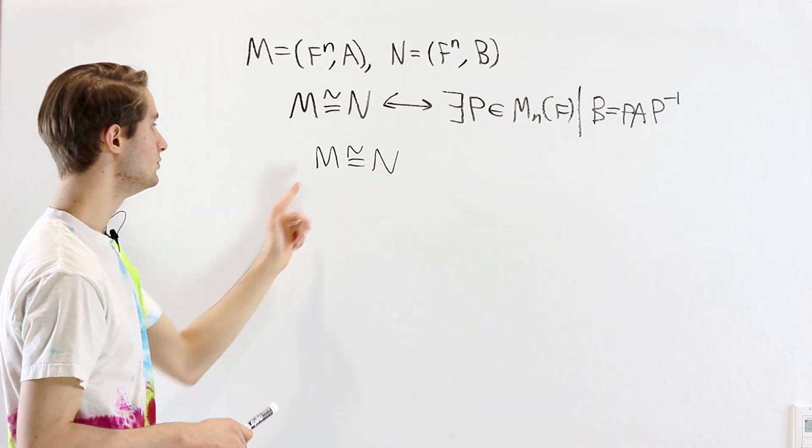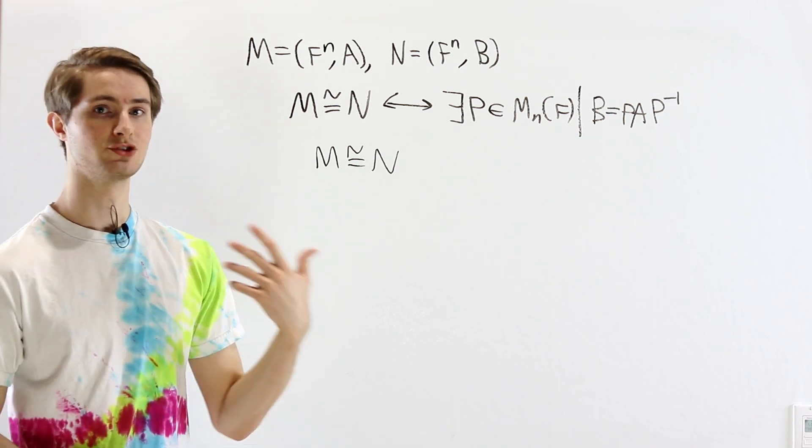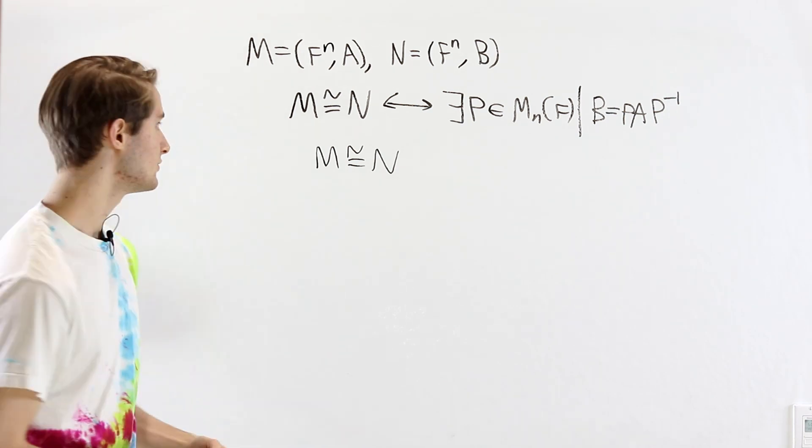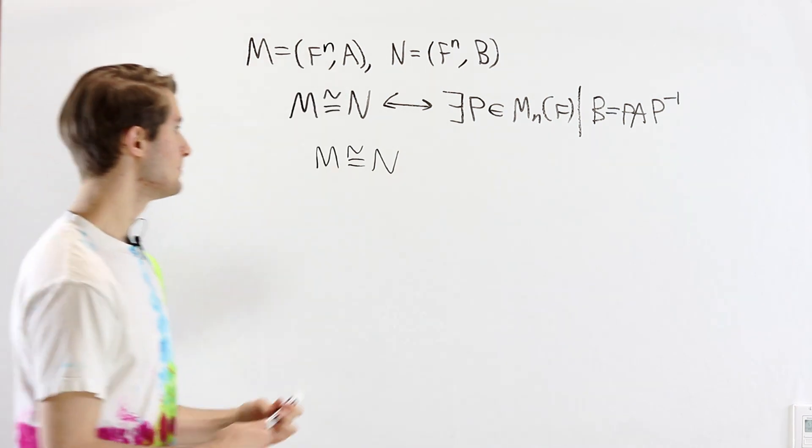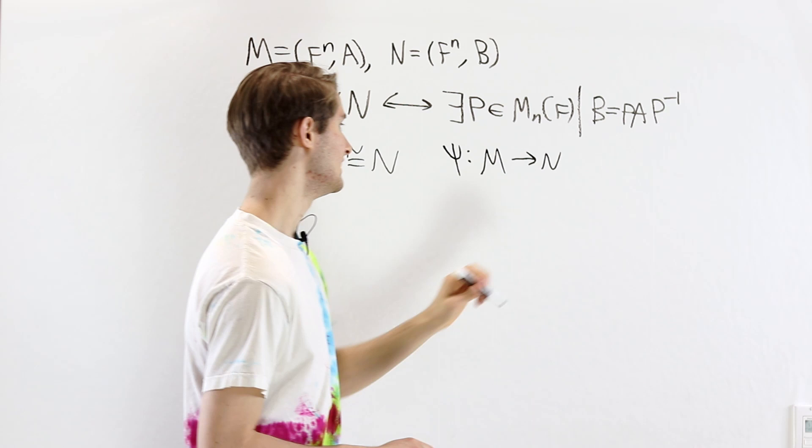If we have two F[x]-modules being isomorphic, that means there has to be an isomorphism. So let's see what the isomorphism looks like. We're going to have some map ψ that takes elements in M to elements in N.